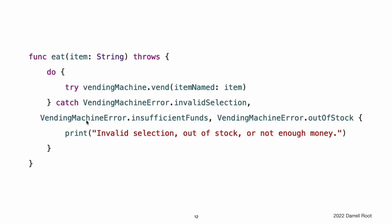Another way to catch several related errors is to list them after the catch separated by commas. In this example, the eatItem function lists the vending machine errors to catch, and its error text corresponds to the items in that list. If any of the three listed errors are thrown, this catch clause handles them by printing a message. Any other errors are propagated to the surrounding scope, including any vending machine errors that might be added to the enumeration later.